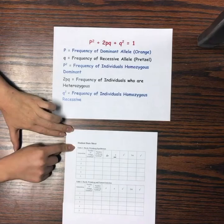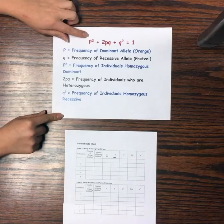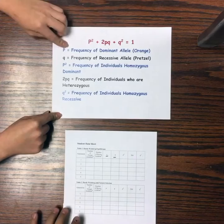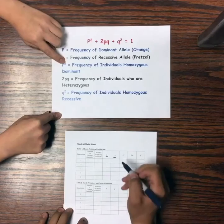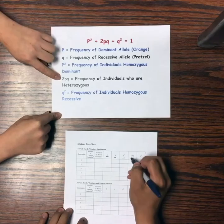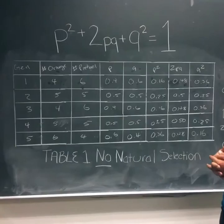At the beginning of class we passed out the student data sheets — bring those out now. Before we do the activity, let's further explain the formula. P-squared plus 2PQ plus Q-squared equals one, where P equals the frequency of dominant alleles (the orange goldfish), Q equals the frequency of recessive alleles (the pretzels), P-squared equals the frequency of homozygous dominant individuals, 2PQ equals the frequency of heterozygous individuals, and Q-squared equals the frequency of homozygous recessive individuals.